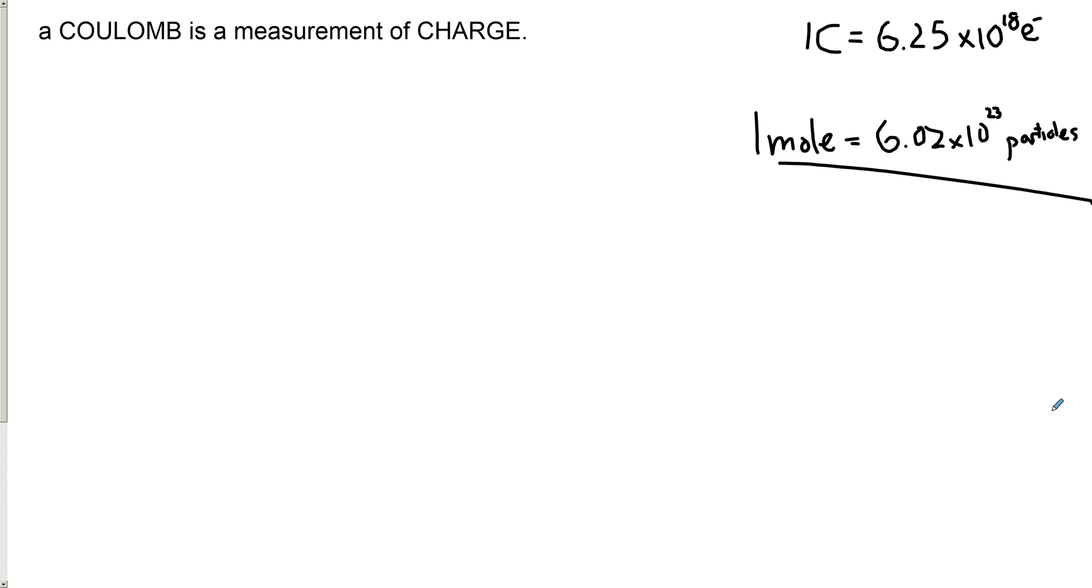So we have this number called the mole that lets us keep track of how many ions or how many protons or atoms there are or molecules. And that's 6.02 times 10 to the 23 of something.